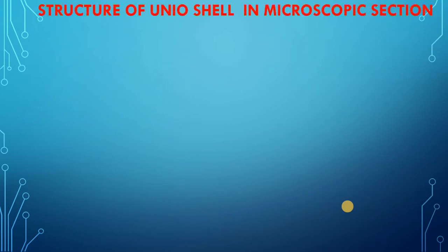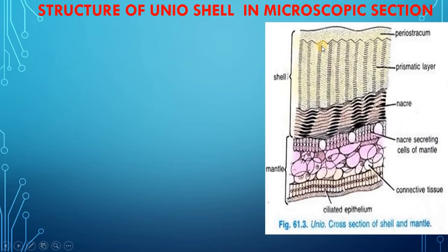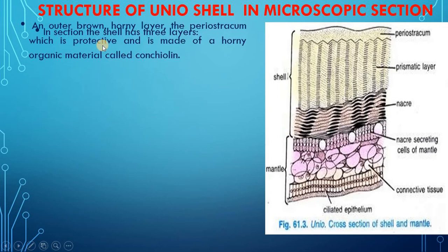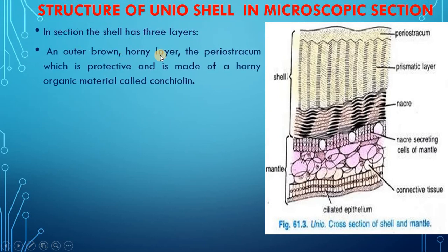Next is the structure of the Unio shell in microscopic section. This picture shows the cross-section of the shell and mantle, in which the different layers will be discussed. In section, the shell has three layers. The outer brown horny layer is the periostracum, which is protective and is made up of horny organic material called conchioline.